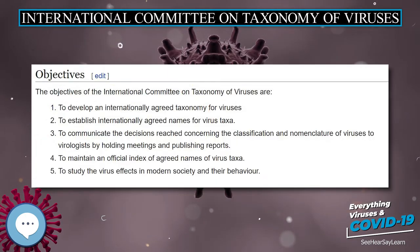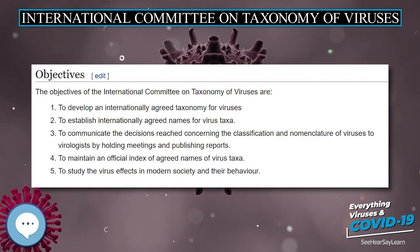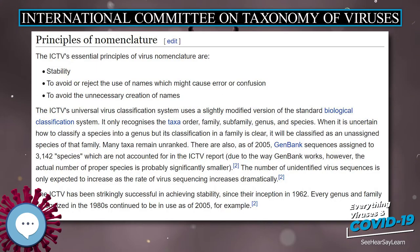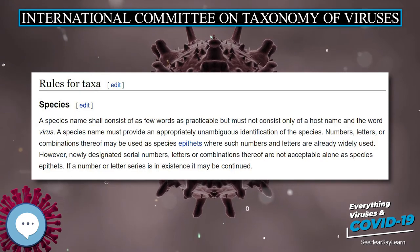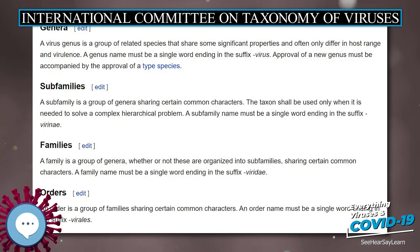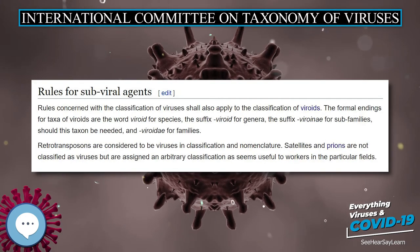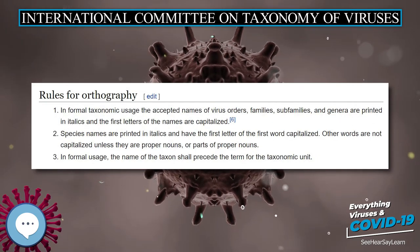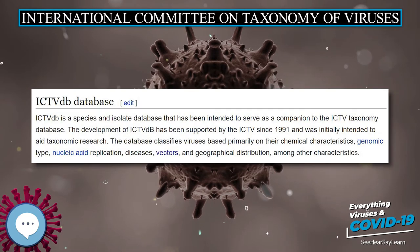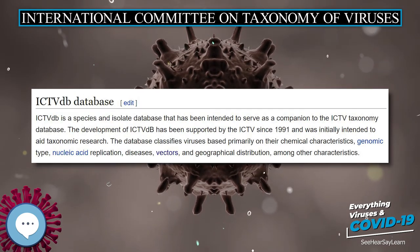When it is uncertain how to classify a species into a genus but its classification in a family is clear, it will be classified as an unassigned species of that family. Many taxa remain unranked. As of 2005, GenBank sequences assigned to 3,142 species are not accounted for in the ICTV report due to the way GenBank works. However, the actual number of proper species is probably significantly smaller.